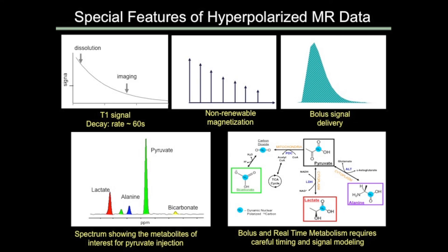There are some very special considerations when developing this technology. The signal decays very rapidly. Because you're taking something and injecting it into somebody, every time you do a data acquisition, you remove some of the signal. So you have to design your application to account for the fact that the signal is going away as you're measuring it. Also, you're injecting a compound, so you have a bolus delivery of the signal. Depending on what compound you inject, it may undergo metabolic changes when it gets into the tissue — not only being able to follow the metabolite itself, but also seeing transitions to different compounds and measuring reaction rates going on within the tissue.